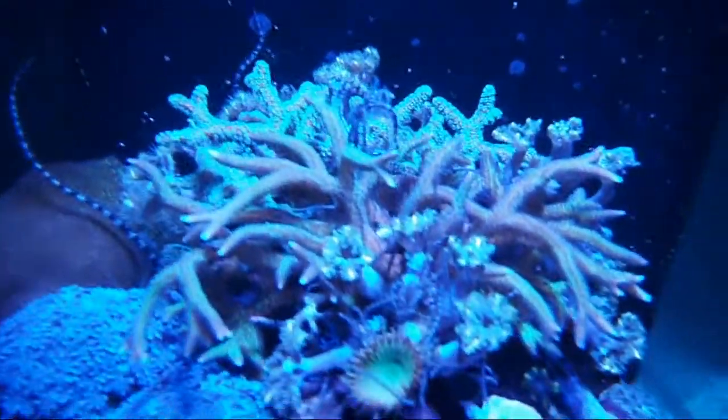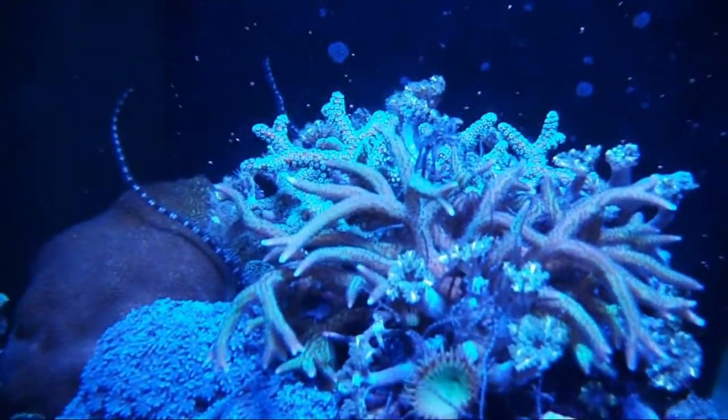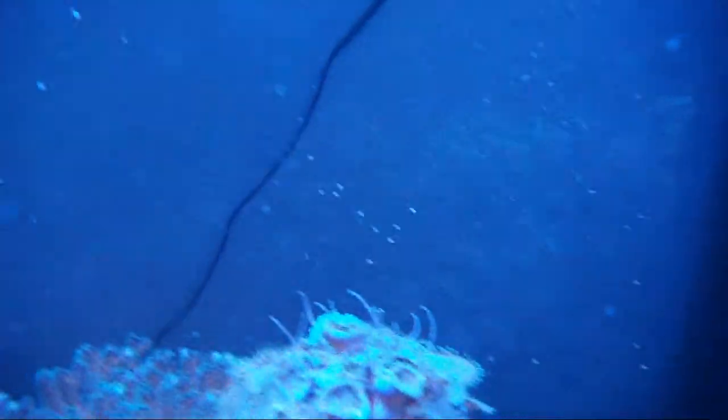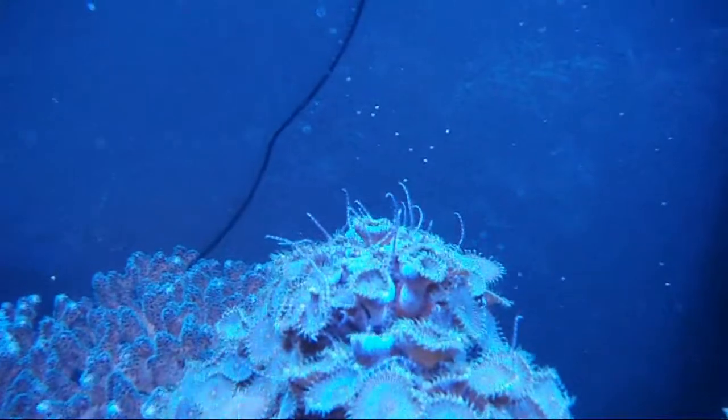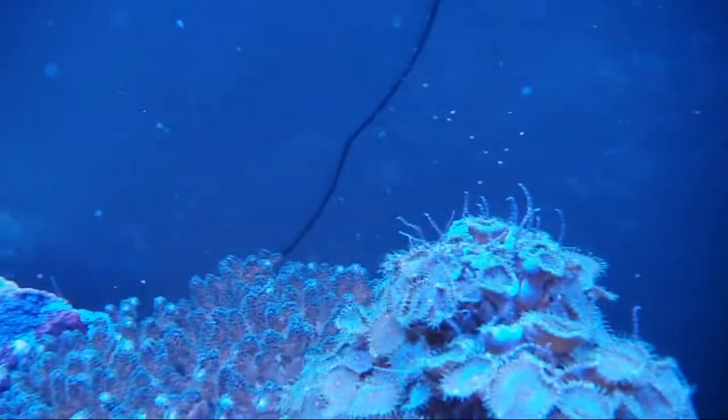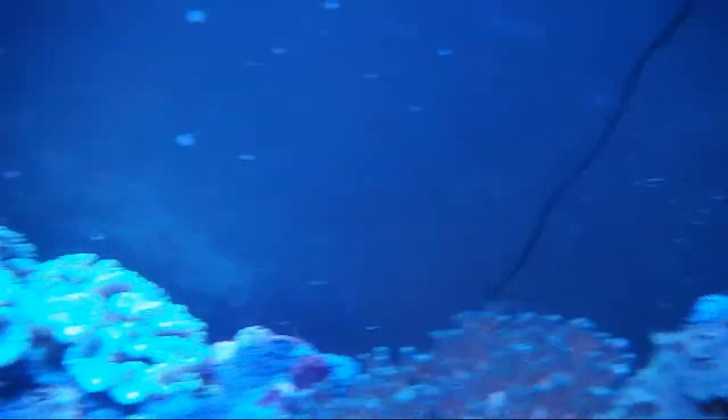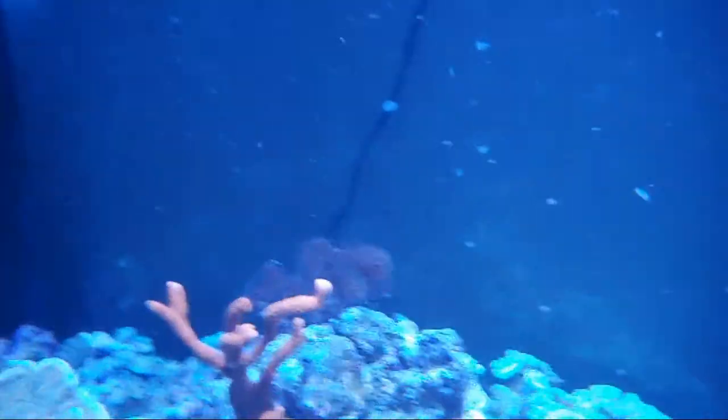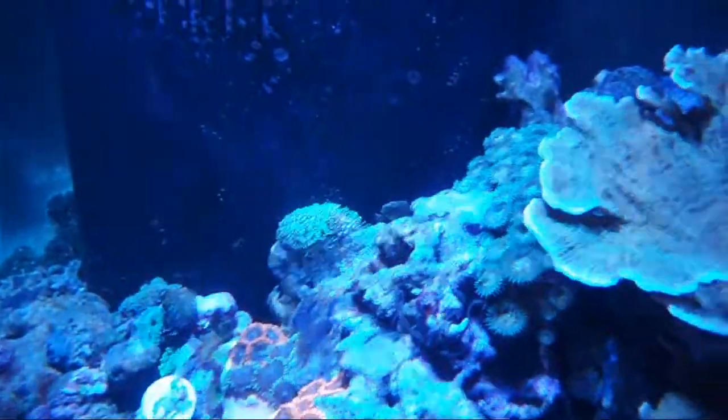This is a good example of how brittle stars come out. I just finished scraping the tank and you can see they're everywhere. They come out and wave their little arms and collect the detritus and algae and whatever else has been scraped or loosened in the tank. They inhabit every nook and cranny, so you'll see many, many of them.